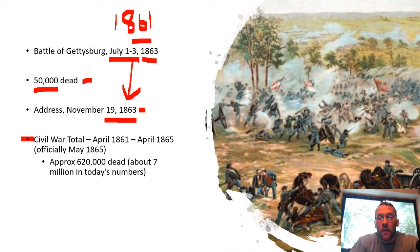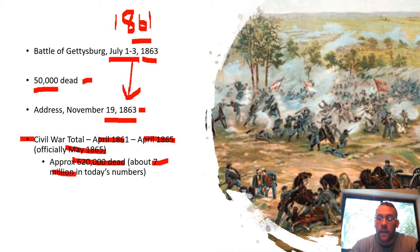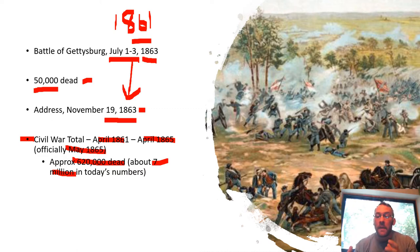A quick look at some numbers. The Civil War in total happened between April of 1861 and April of 1865, when Lee surrenders to Grant at Appomattox. Officially it's May of 1865 before all the paperwork is done. Approximately 620,000 Americans died from both the South and the North. In today's numbers, as far as today's population is concerned, that would be the equivalent of about seven million Americans — and again, this happened within the United States.